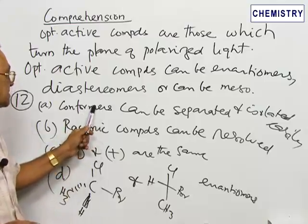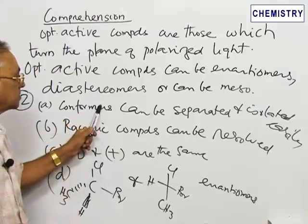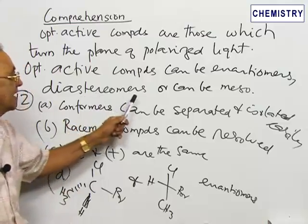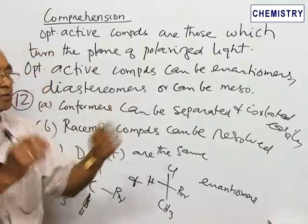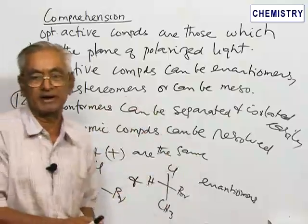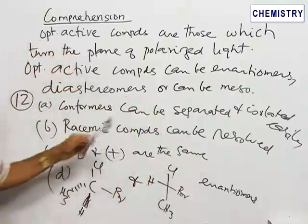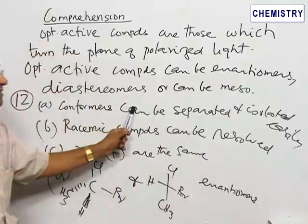Rotational isomers. The statement given is the conformational isomers can be easily separated and isolated at ordinary temperatures. When you have two different conformers, they can be easily identified, just like the enantiomers. Is that a correct statement?